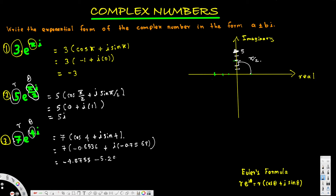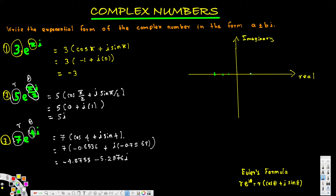After multiplying by 7, we get approximately negative 4.5755 minus 5.2976i. That's the final complex number for this example. Now let's plot this on a graph.